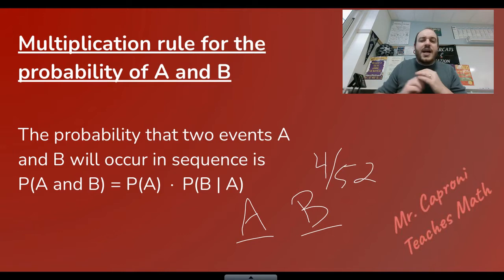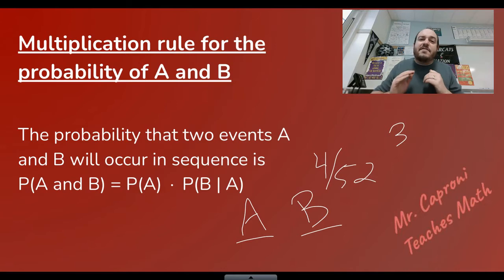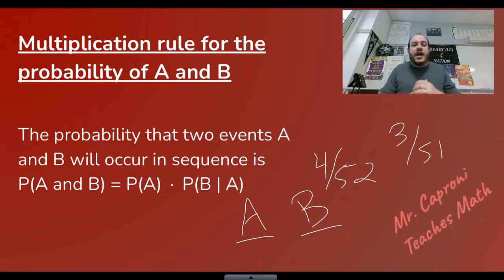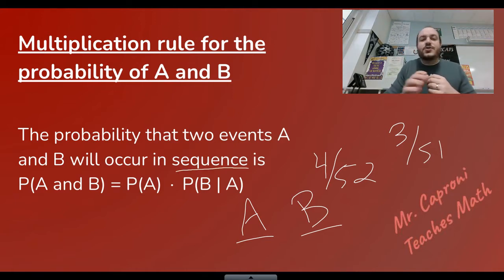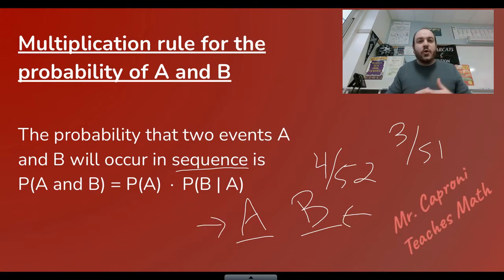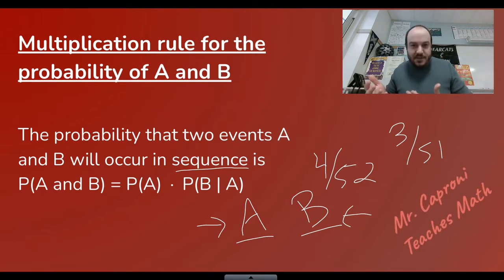But for the second king, if we don't put that card back, the probability is no longer four over 52. Now we're holding a king, so there are only three left, and instead of 52 cards in the deck there are only 51. Because of that, our probability of B has changed, and that's what we have to show in our formula. This is why the word 'sequence' is so important — A happens first and then B.